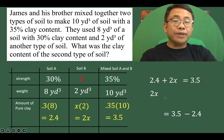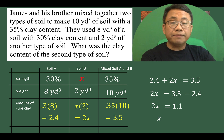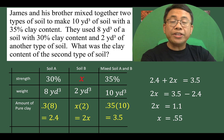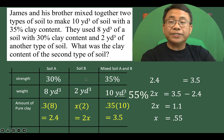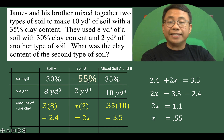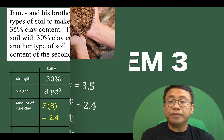Solving for x: 2x equals 3.5 minus 2.4, simplifying to 2x equals 1.1, and dividing both sides by 2 to arrive at x equals 0.55 or 55%. So the percentage of clay content for soil B is 55%.